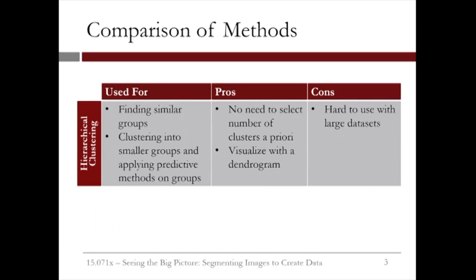This week, we learned hierarchical clustering, which is used to find similar groups. An important aspect of clustering data into smaller groups is that we can improve our prediction accuracy by applying predictive methods, like logistic regression, on each cluster. We expand on this cluster-then-predict idea in one of our homework problems.